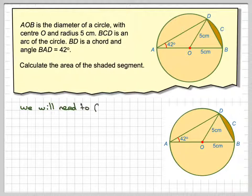We will need to calculate angle BOD, this angle here. We only have this one angle, but we notice that OA and OD are equal radii, so this is also 5 centimetres, which means that this angle here is also 42 degrees.